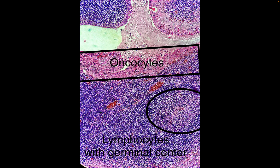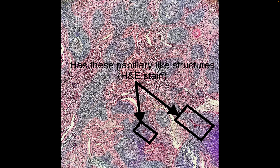That is why Warthin tumor is called papillary cystadenoma lymphomatosum. It is Milan category 4A, as is pleomorphic adenoma. There is generally no molecularly defined translocation for Warthin tumor.